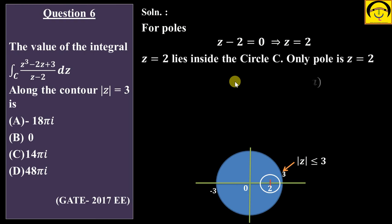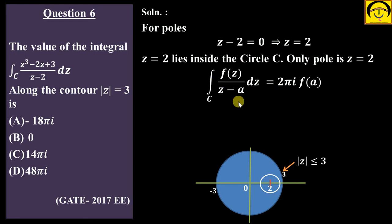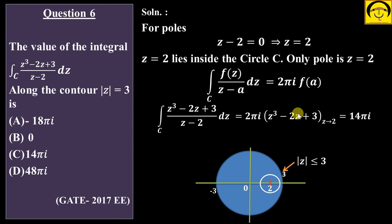So this is the Cauchy integral formula case. The Cauchy integral formula gives 2πi · f(a), where a = 2 here. So the integral equals 2πi multiplied by substituting z = 2 into the numerator: 2³ − 2(2) + 3. That gives 8 − 4 + 3 = 7. And 7 × 2 = 14, so it becomes 14πi. The answer is option C.